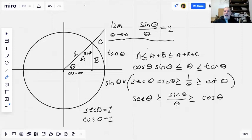So as theta approaches 0, these are going to get closer and closer to 1, but the expression in the middle cannot be more than the secant of theta nor can it be less than the cosine of theta.